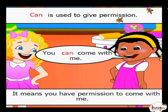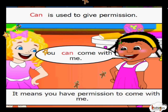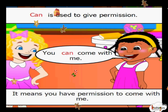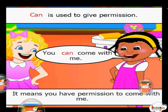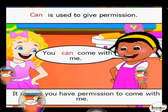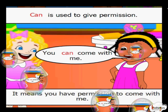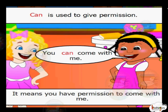Neetha told Reema, 'You can come with me' — it means Neetha is allowing Reema to go with her. 'Can' is used to ask for permission and to give permission. For example, you ask permission to enter the teacher's room: 'Can I come in?' The teacher gives permission saying, 'Yes, you can.'